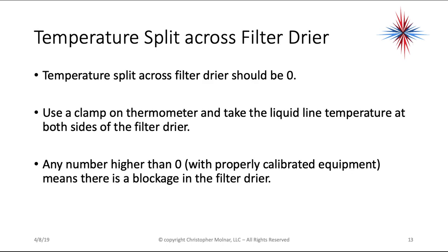Another important number that a lot of people miss is the temperature split across the filter dryer — it should be 0. Use a clamp-on thermometer and take the liquid line temperature at both sides of the filter dryer. Any number higher than 0 with properly calibrated equipment means there's a blockage in the filter dryer.